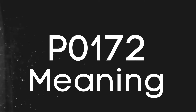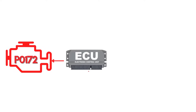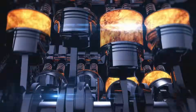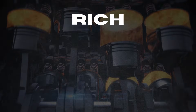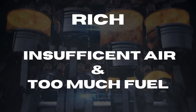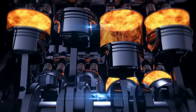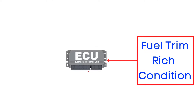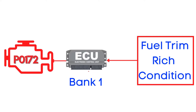First things first, let's break down what the P0172 code actually is. This code gets triggered when the engine control module receives an input signal from the oxygen sensor, also called the air-fuel ratio sensor, indicating that the air-fuel mixture has been running too rich for an extended period of time. A rich mixture means too much fuel and insufficient air in the combustion process, which can lead to poor engine performance, increased emissions, and potential damage over time. When this happens on Bank 1, the ECM flags it as a problem and triggers the P0172 Trouble Code.